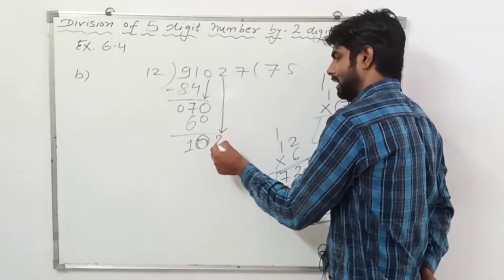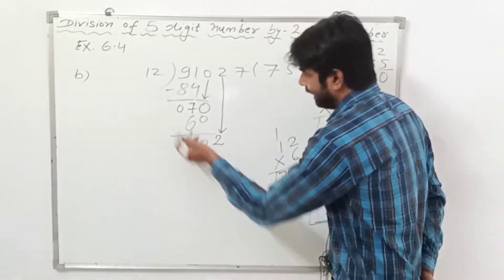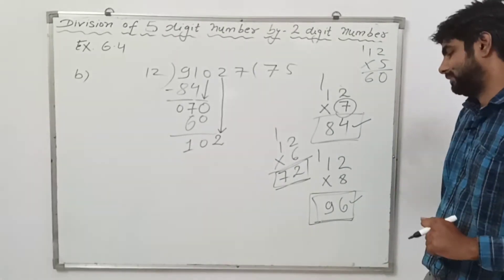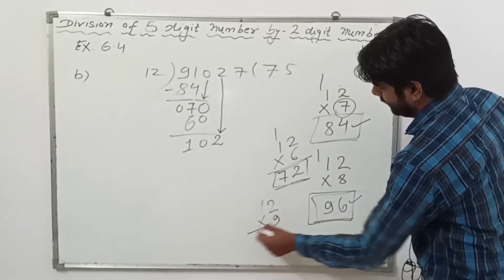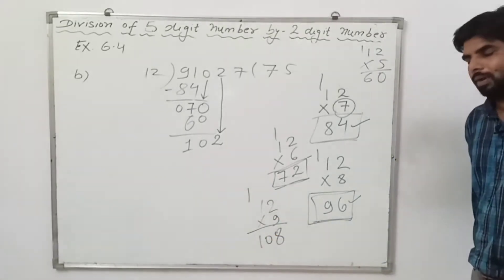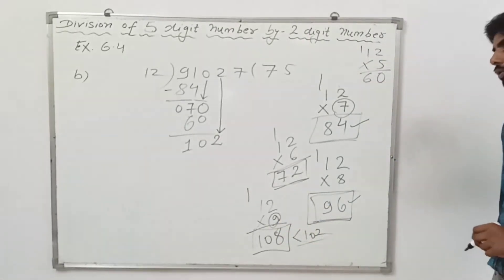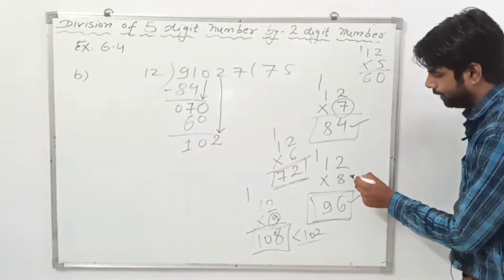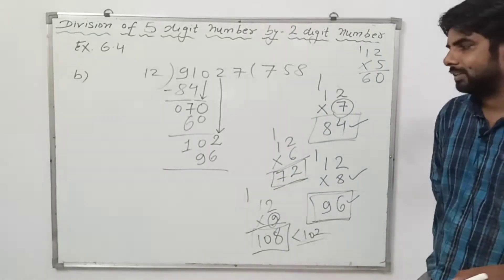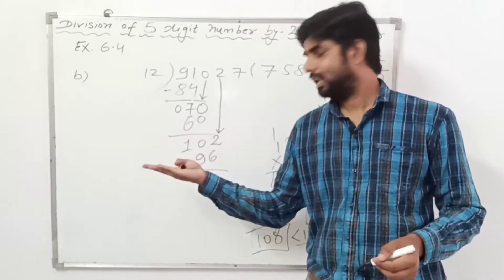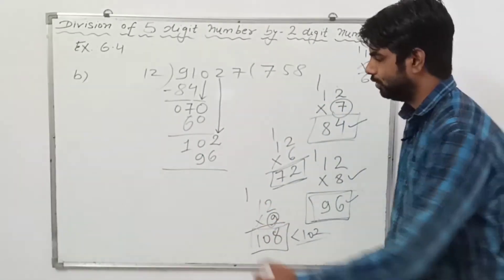We bring down the next digit 2, so it becomes 102. We need to find a table-of-12 value equal to or less than 102. We try 12 times 9: 9 times 2 is 18, carry 1; 9 times 1 is 9, plus 1 is 10 — that gives 108. But 108 is greater than 102, so we cannot use 9. We use 8 instead: 12 times 8 is 96, so we write 96.